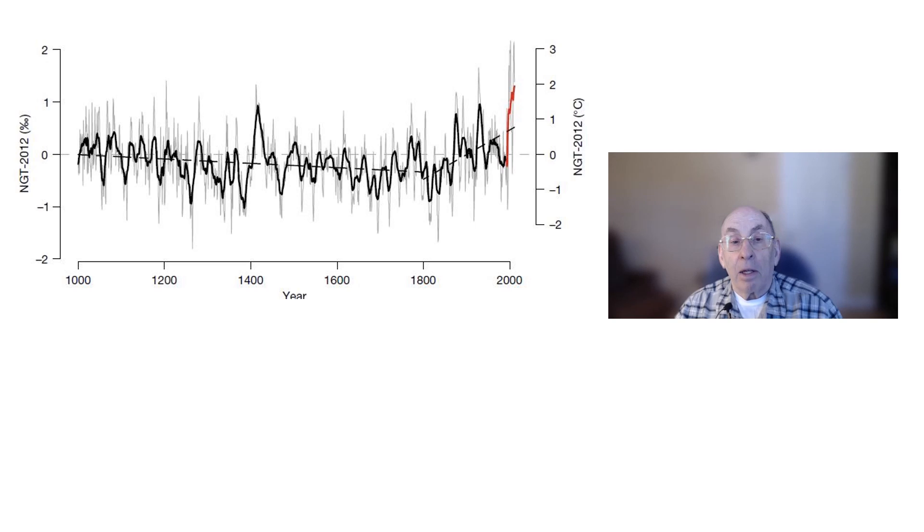In fact, the most recent temperatures from central and northern Greenland are about 1.5 degrees centigrade, plus or minus 0.4 degrees centigrade warmer than during the 20th century, which is remarkable.